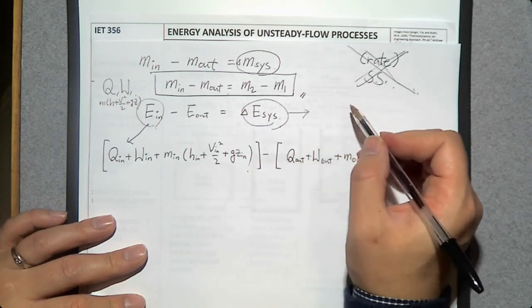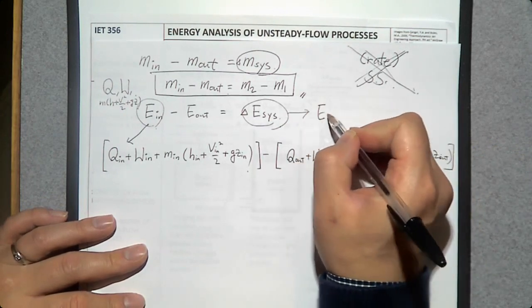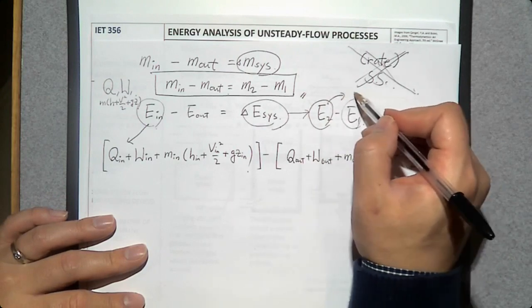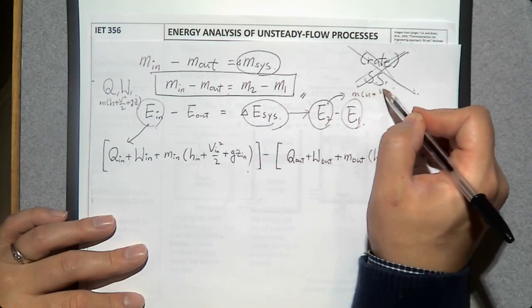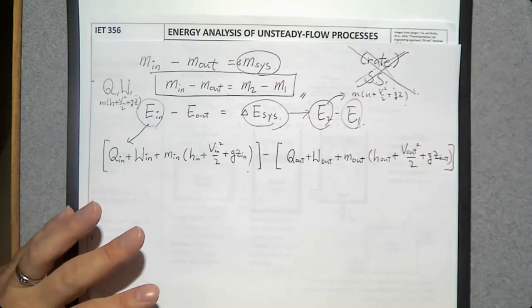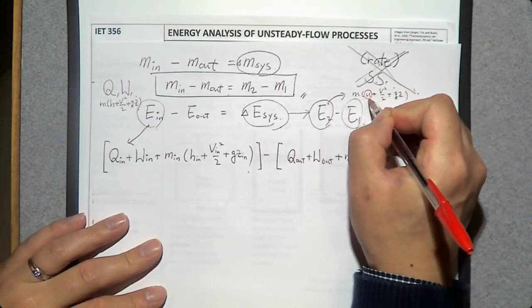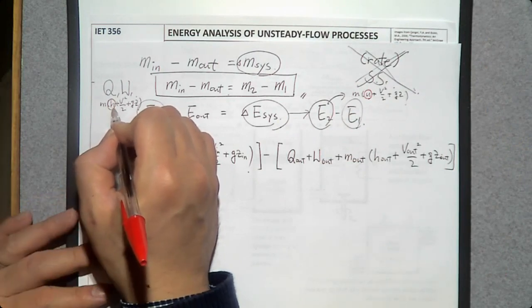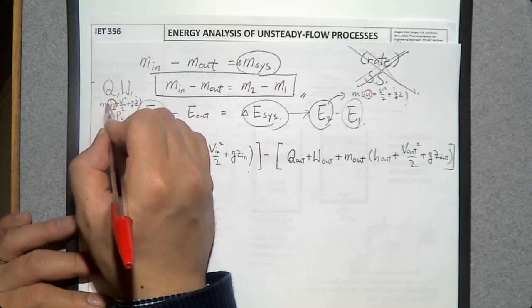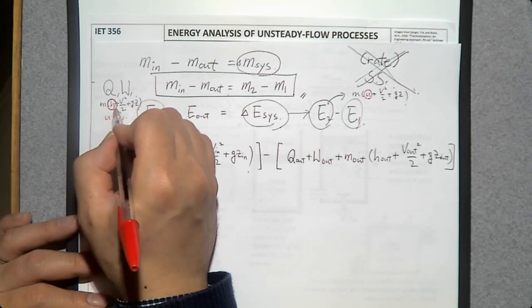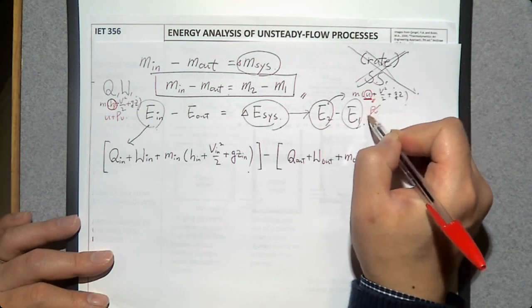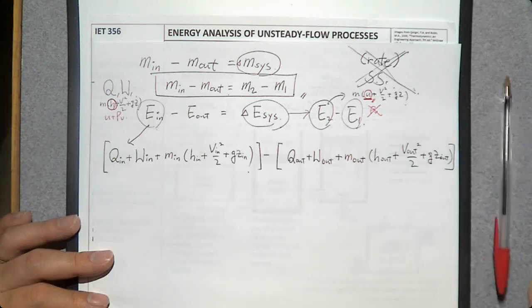How do we determine the change of energy? Final energy E2 minus initial energy E1. To find those: mass times internal energy U, plus kinetic energy, plus potential energy. One important thing: we use internal energy U instead of enthalpy H here, because when there is mass transfer in and out, flow energy is added — that's why we use H for incoming or outgoing mass. But for the total energy of the system before and after the process, there is no flow energy, so we use U instead of H.